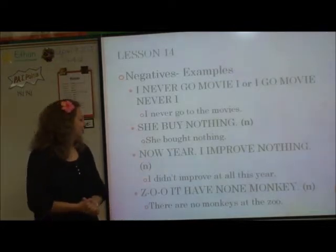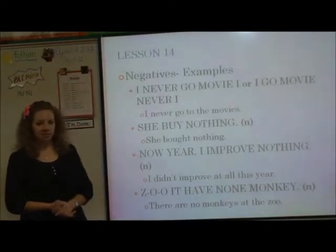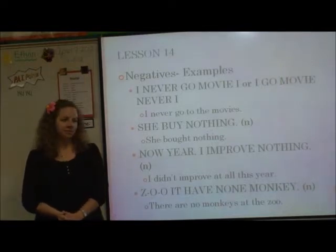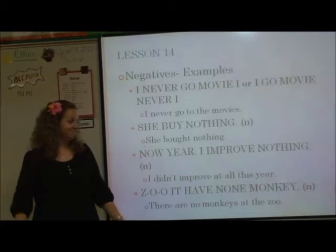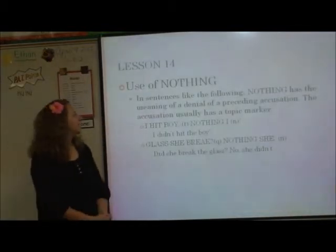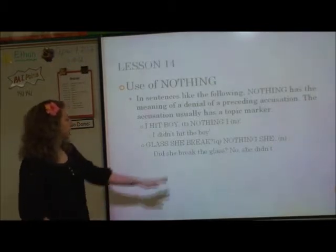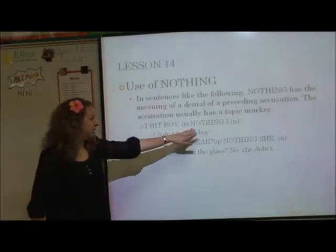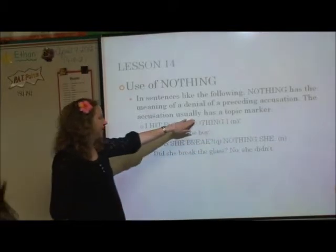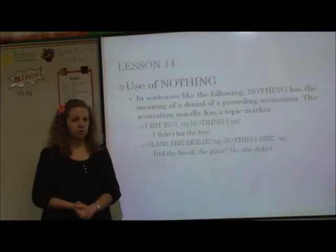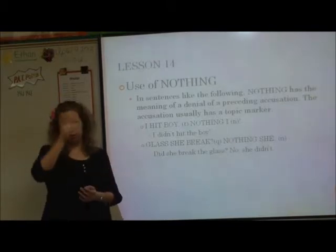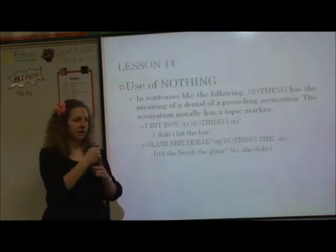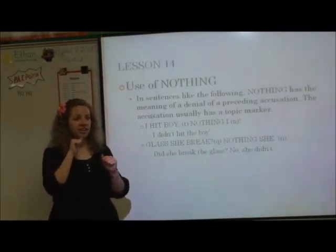And then this last one: 'there are no monkeys at the zoo.' Zoo — you just spell Z-O-O or sign there. 'Have none monkeys.' Then the use of nothing — in sentences like the following, nothing has the meaning of a denial of a preceding accusation. The accusation usually has a topic marker. So 'I hit boy' is the topic — it has the T line. Then the rest is 'nothing I.' The sign they use for nothing here is this one.